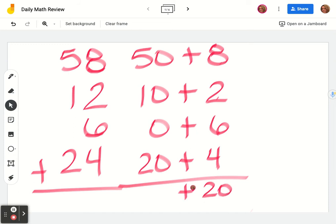Then we add our tens, 50, 60, 70, 80. And then I like to rewrite that vertically to make sure we don't make any mistakes when we add those up.